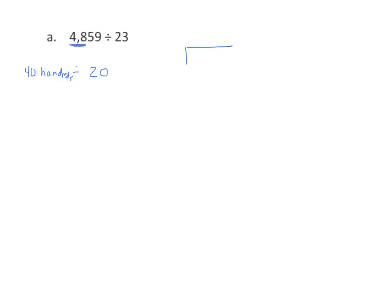Sometimes we have to adjust our estimates based upon the actual numbers that we work with. So I have 23, and I would multiply that 23 times 2, because that was about 2, and we get 46. It's not larger than 48. So I have my 48 hundreds, and I subtract 46 hundreds, and I get 2 hundreds. I'm going to record my 2 in the hundreds place in my quotient.